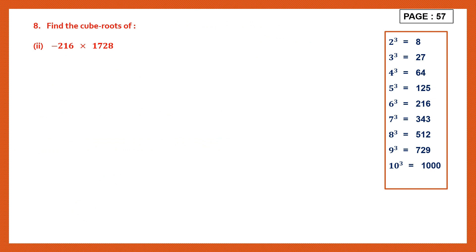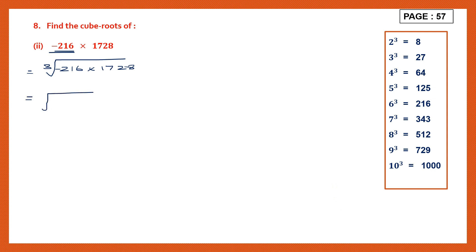Next question — find the cube roots of minus 216 into 1728. So we have 216 that's minus into 1728, find the cube root. Now 216 we already know. If you look at the table you can see 216 is here — that means 6 cubed. 6 into 6 into 6 will give us 216. So let's write for 216: we can put the minus sign outside and write 6 into 6 into 6. We've finished with 700. Now let's take 2.